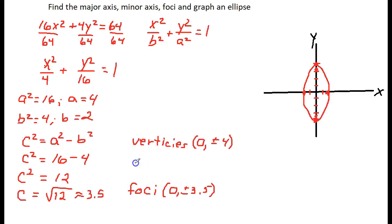And then co-vertices are at plus or minus 2, comma, 0. And remember, our center for this is 0, 0. How do I know? There is nothing added to or subtracted from the x squared or y squared in the numerator. That's how I know.